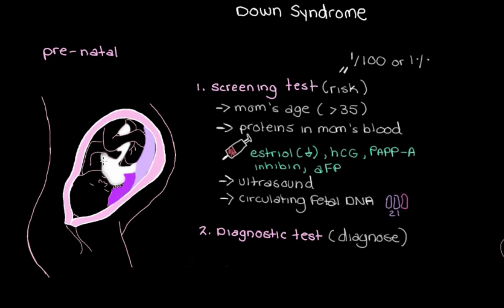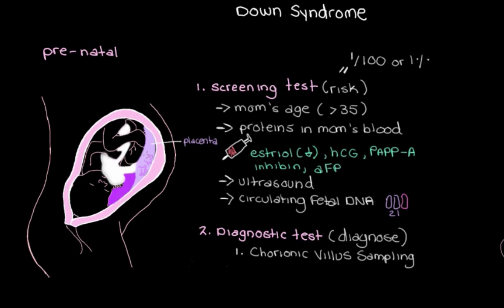To diagnose Down syndrome, we need to actually look at the fetus's DNA, and there are two ways to do this in the prenatal period — which test we do often depends on how far along mom is. The first is chorionic villus sampling. Inside mom, the placenta develops in the uterus, provides the fetus with oxygen and nutrient-rich blood, and removes waste. Most of the placenta is made up of projections called chorionic villi, which contain DNA from the developing fetus. We can go in and take a sample to get this fetal DNA.